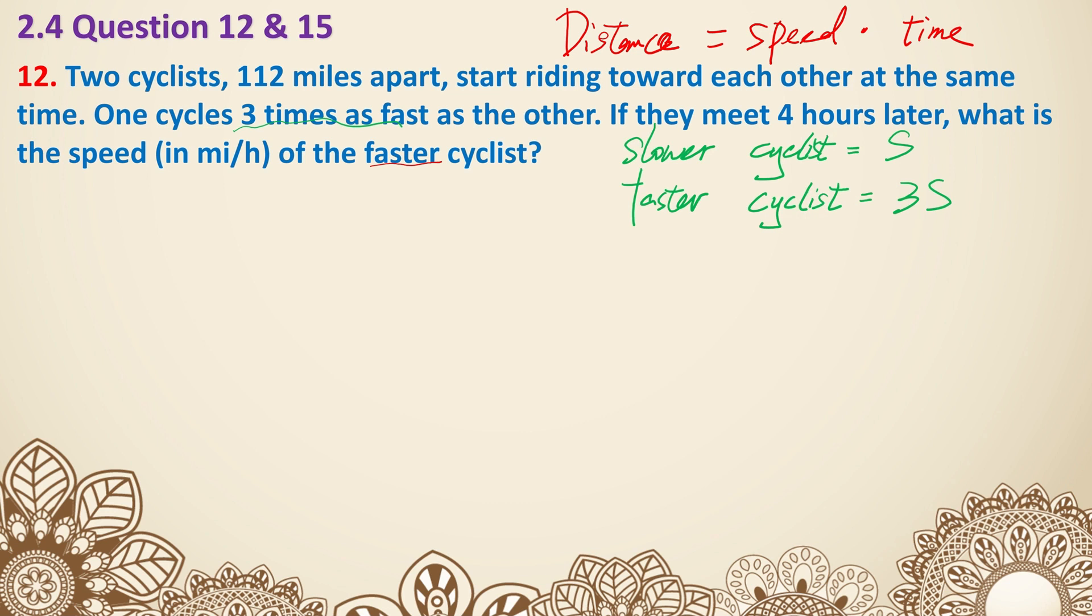And then they are 112 miles apart. So let's say on the left side, it's your slower one, and on the right side is your faster one. They're driving towards each other. After the four hours, the slower one is going to drive less than the faster one. So let's say they meet right here. So this is how far the slower one actually drove. And in that process, he drove four hours, and the speed is s. For the faster cyclist, it's also four hours, but the speed is 3s.